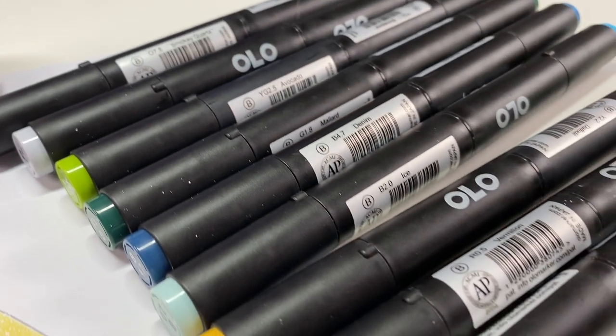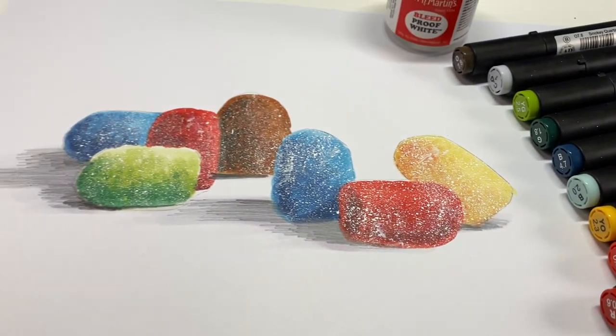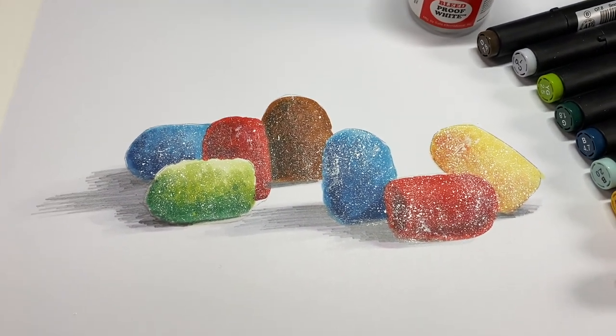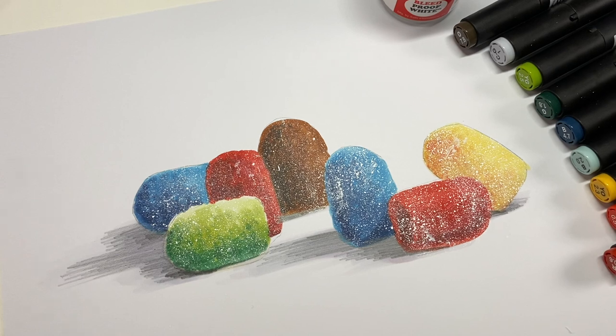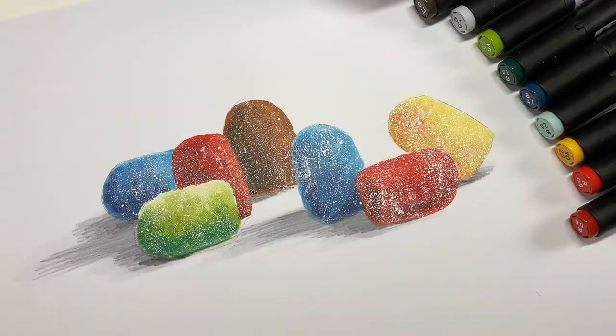Well, hi there. I'm Sandy Alnock, and I promised you another unboxing this week. This is going to be Olo alcohol markers, and to swatch them, I made gumdrops, and I'm going to show you how to make the cutest, simplest gumdrops you've ever seen. Everybody can do this.